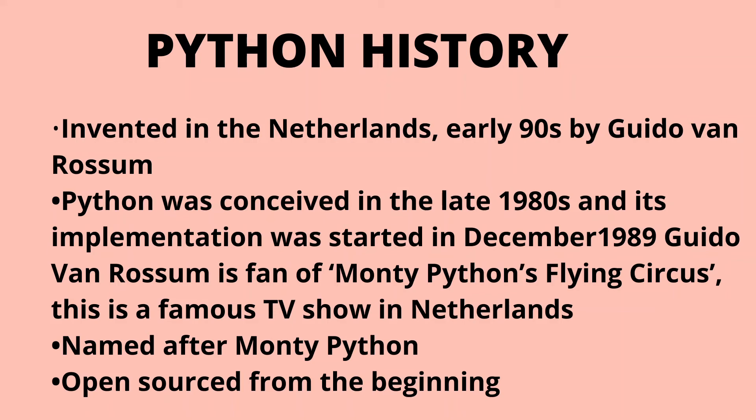Guido van Rossum is currently working at Dropbox. The first public release was in February 1991. The Python.org website was formed in 1996 or 1997, and the Python Software Foundation was formed in 2001. Van Rossum remained the principal director of Python and received the title Benevolent Dictator for Life.